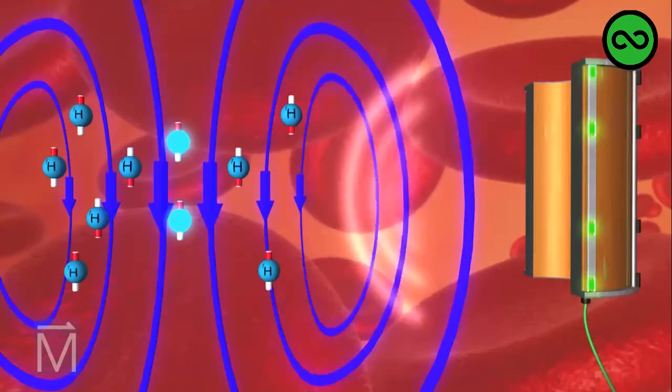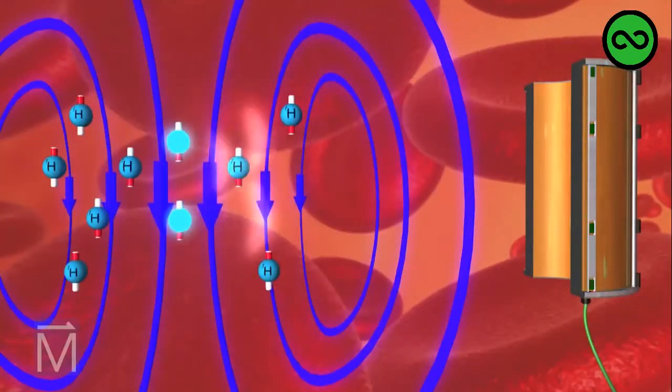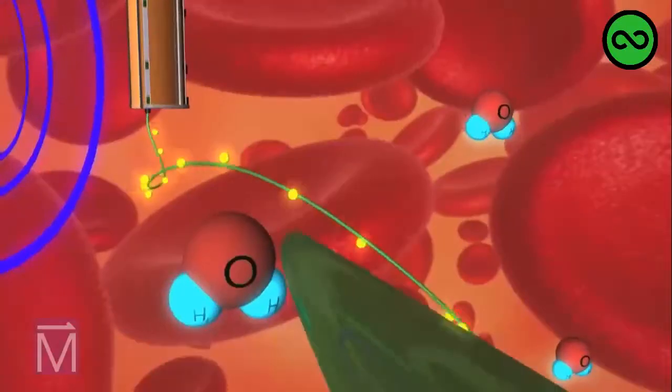Let's watch this one more time. The protons absorb the energy from the RF waves, then flip on their axes and emit the energy back to the coil.